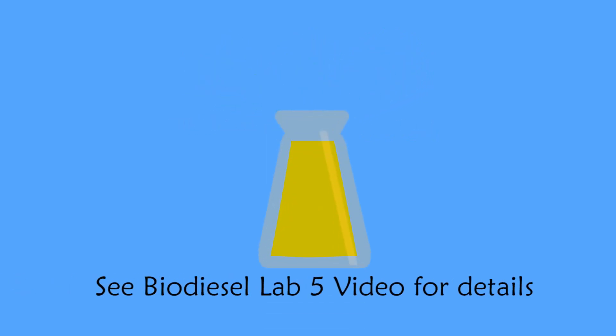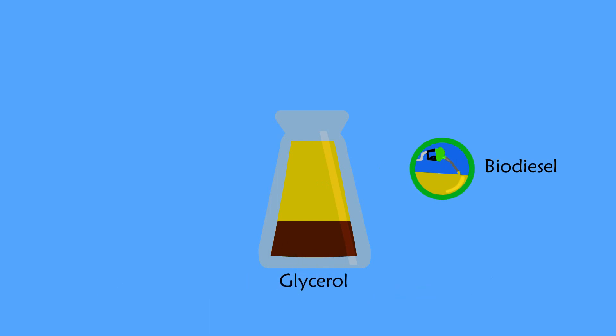When triglycerides are mixed with methanol and a catalyst, a reaction occurs and two phases separate. The top portion is biodiesel and the glycerol portion settles to the bottom. The glycerol will contain most of the catalyst, soap, and excess methanol, but some will also be in the biodiesel.